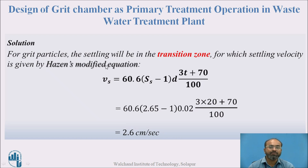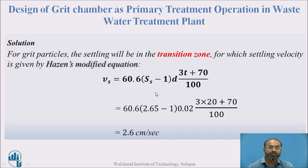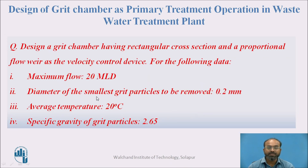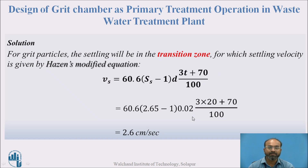First, I calculate the settling velocity of grit particles using Hazen's modified equation, assuming settling in the transition zone. Using the formula Vs = 60.6 × (Ss − 1) × d × (3T + 70) / 100, I put in values: specific gravity 2.65 minus 1, diameter 0.02 cm (converting 0.2 mm to centimetres by dividing by 10), temperature 20°C. This gives a settling velocity of approximately 2.6 cm/s.